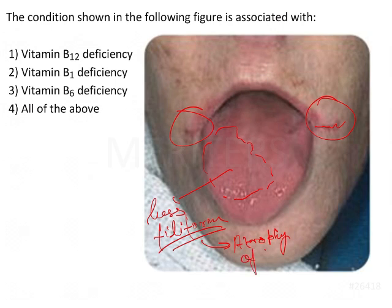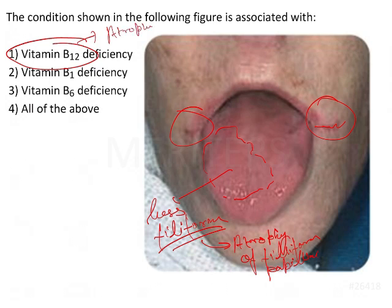Atrophy of filiform papillae. Now if we just try to understand the options here, vitamin B12 deficiency - yes, that is associated with atrophy of filiform papillae.